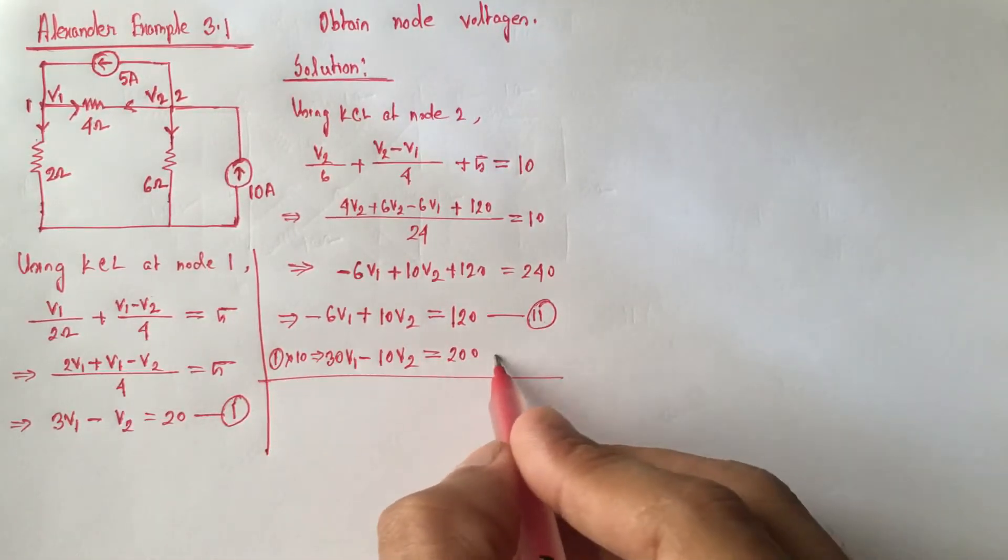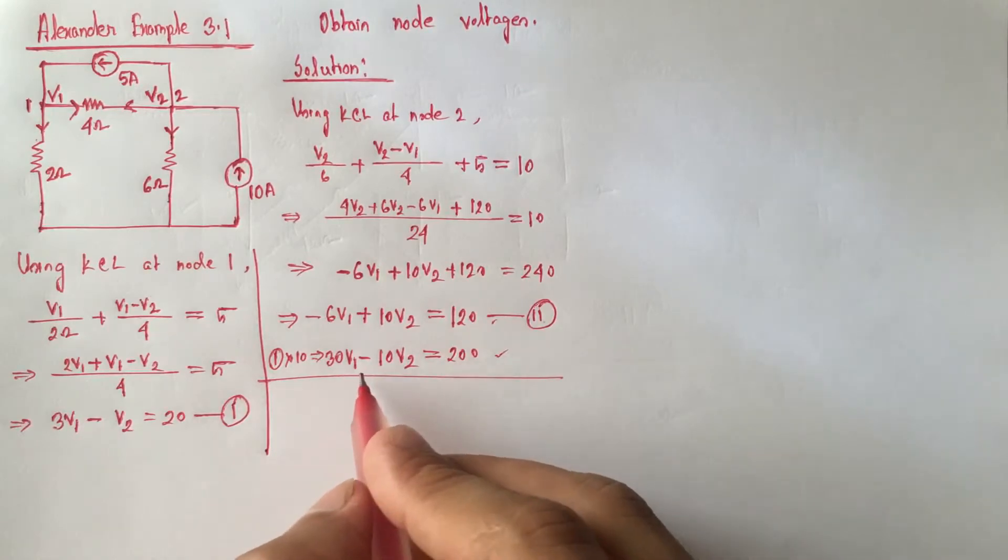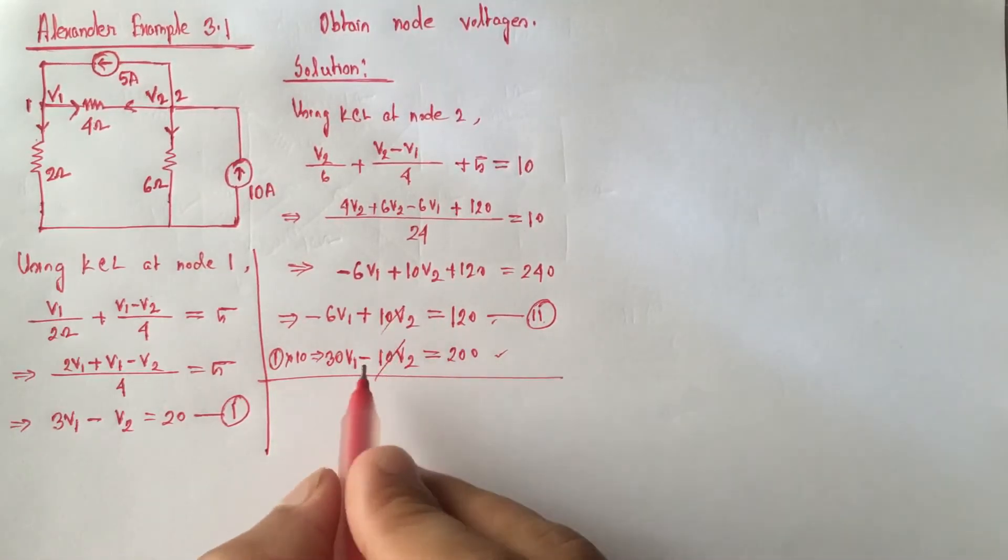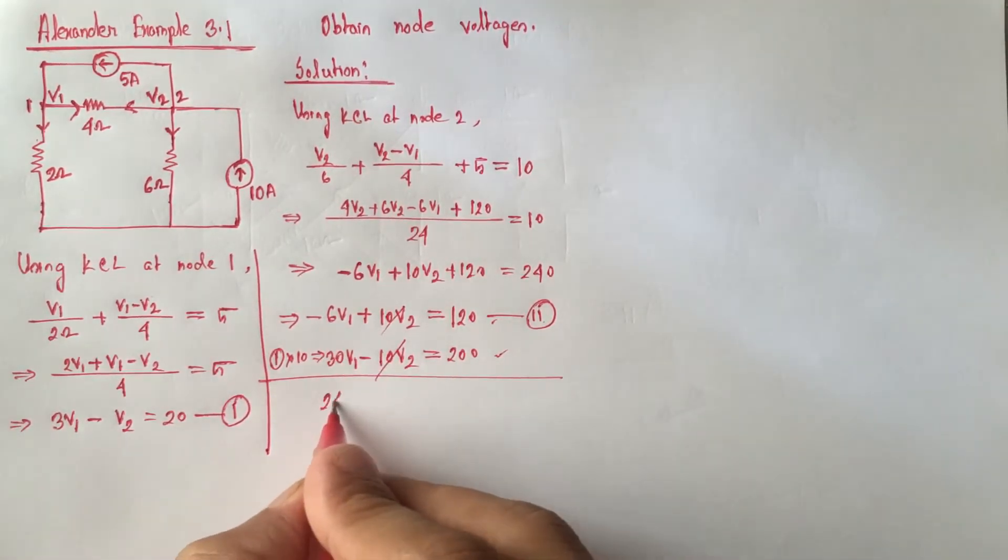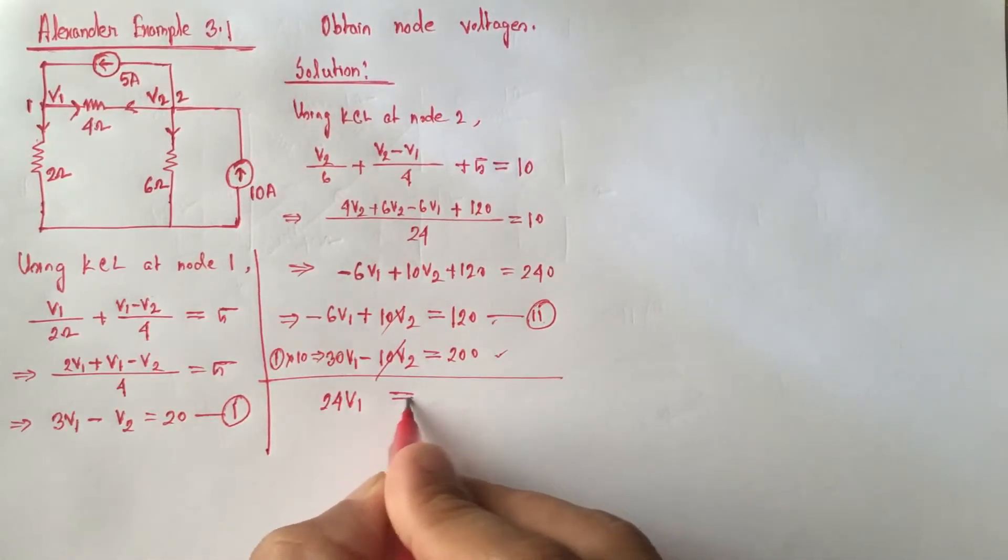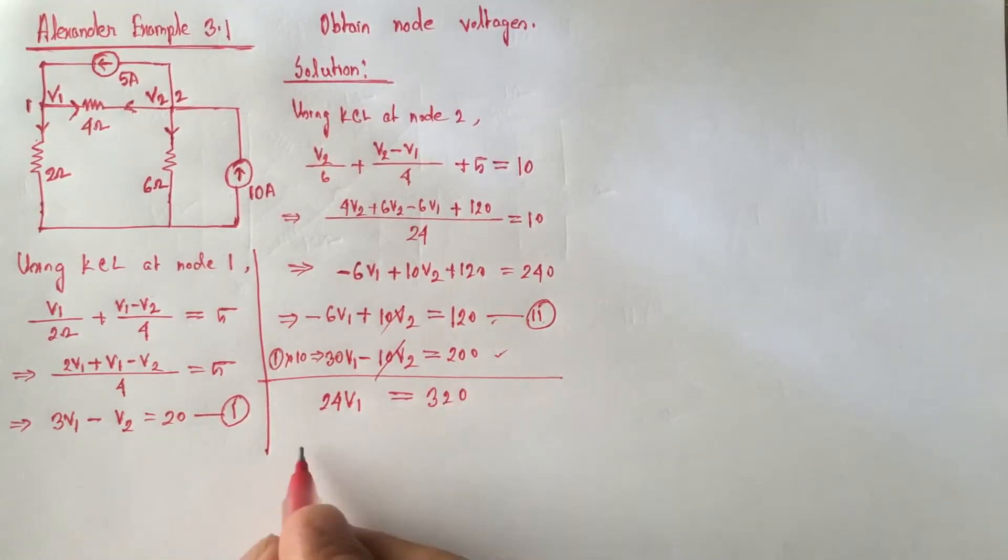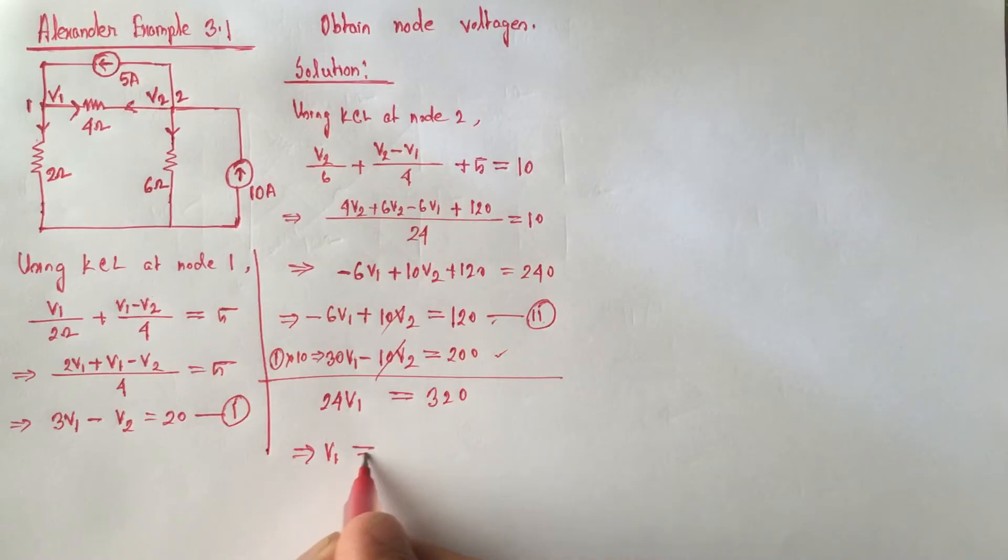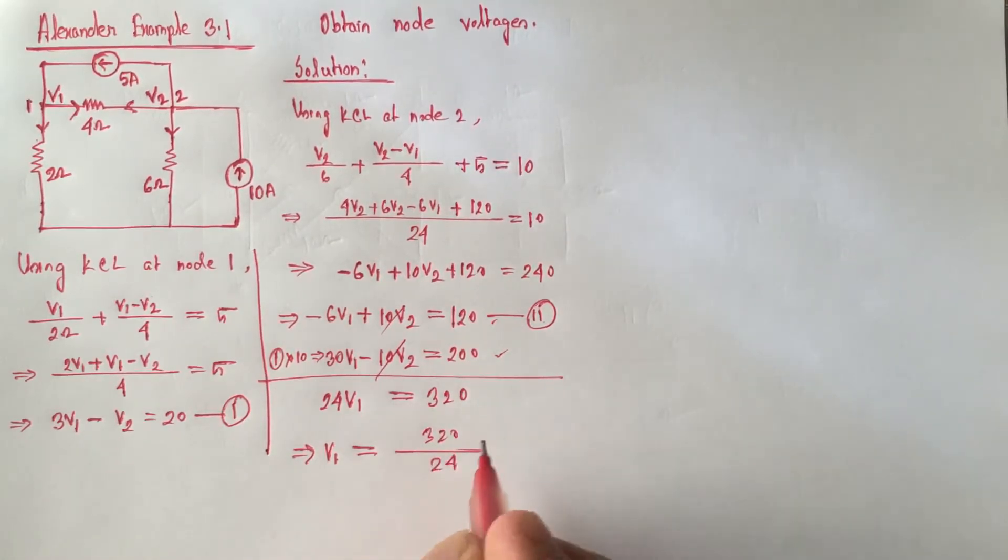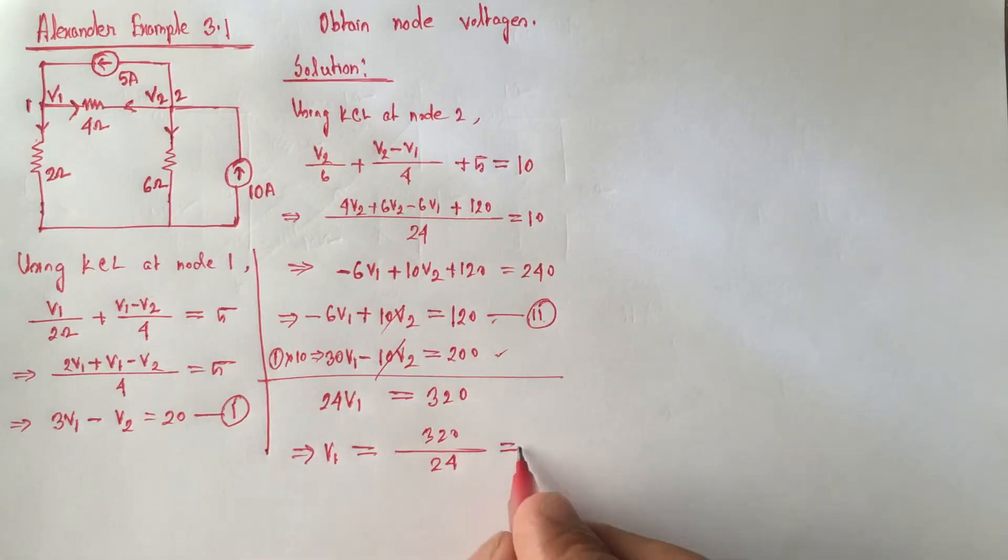So adding these 2 equations, 10 V2 will cancel each other. So this will be 24 V1 is equal to 320, that is V1 will be equal to 320 by 24, that is 13.33 volt.